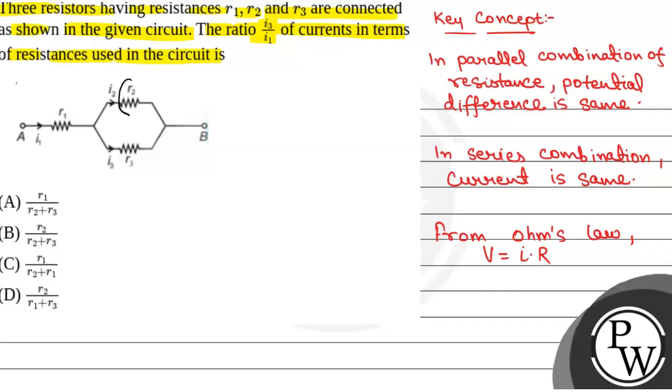Now, here we can see R2 and R3 are in parallel combination. So if potential drop across R2 is V2 and that across R3 is V3, then V2 will be equal to V3.